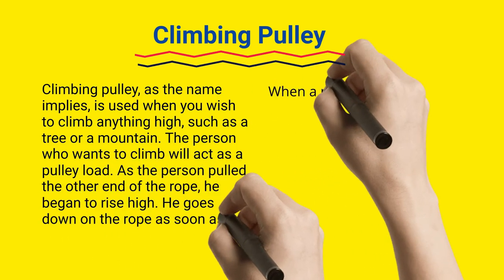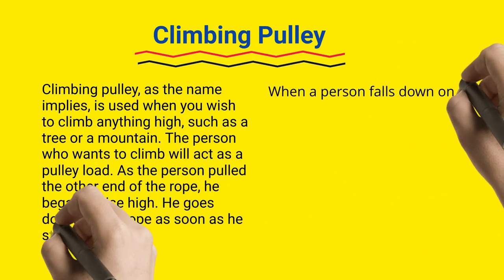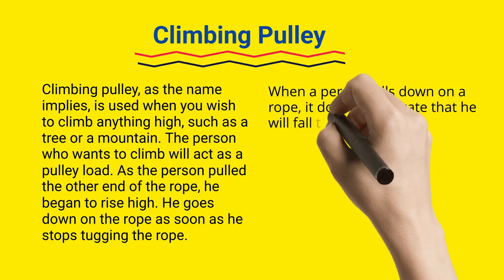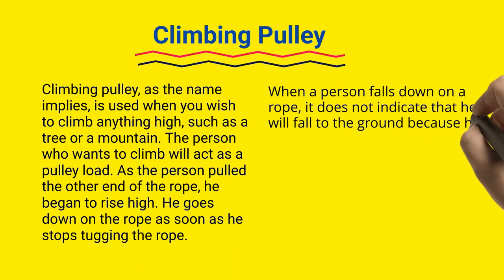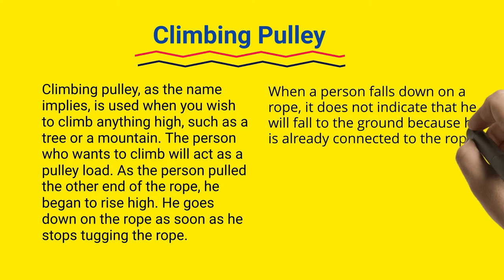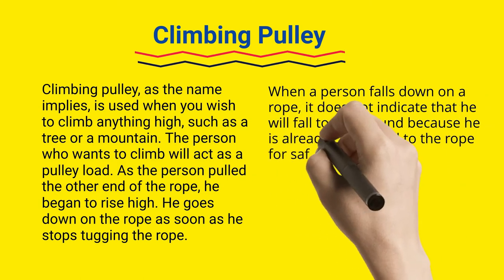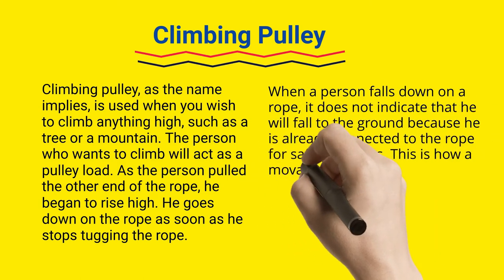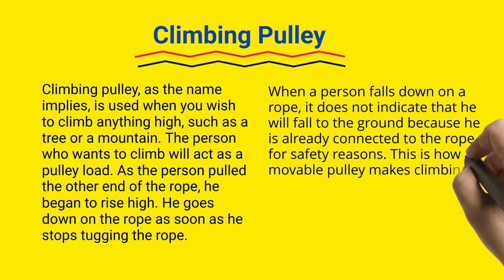When a person falls down on a rope, it does not indicate that he will fall to the ground because he is already connected to the rope for safety reasons. This is how a movable pulley makes climbing high simpler.